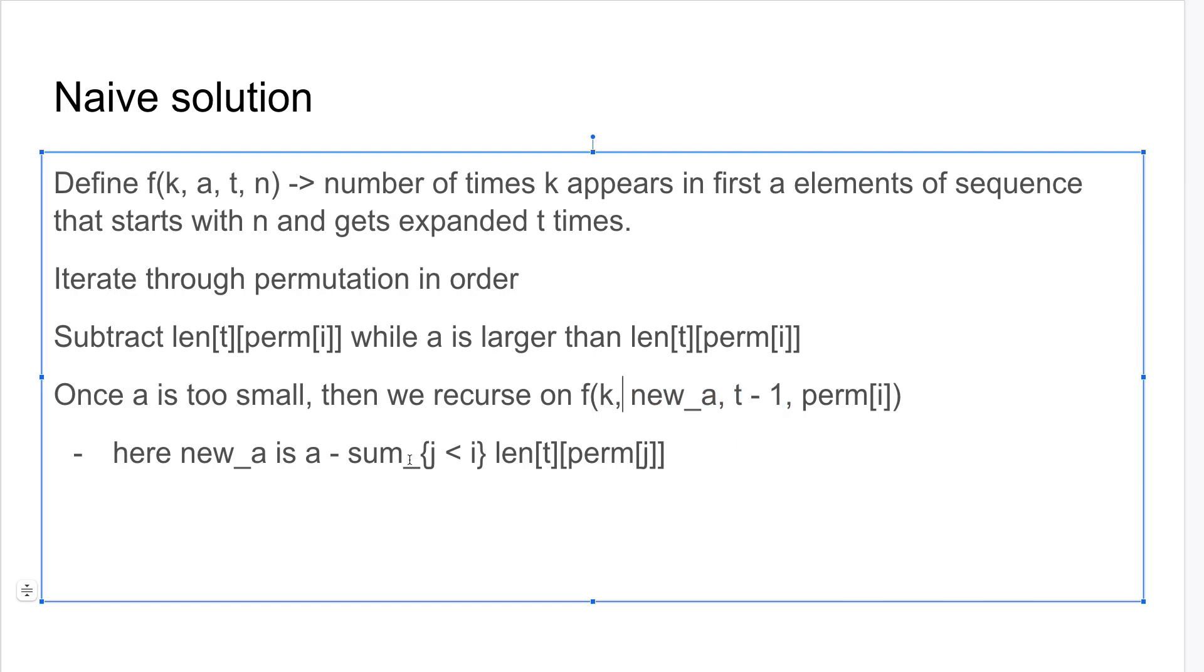k stays the same. And new_a is just you subtract these values. So as you're iterating through the permutation, you need to also remember to remove elements that are bigger than your current n.